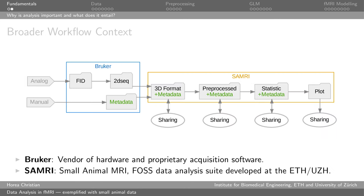The broader workflow concept integrates all these steps from the analog signal to the final plot. This takes you from the analog signal to the FID — free induction decay — which is a file consisting of time series measuring the radio frequency signal from your sample. It's basically a 2D Fourier transform of the data, a recording of electromagnetic oscillations on each row. Then you go to the Bruker machine — the vendor of our hardware and proprietary acquisition software — on a separate computer with proprietary closed source software that does, we assume, reasonable things.